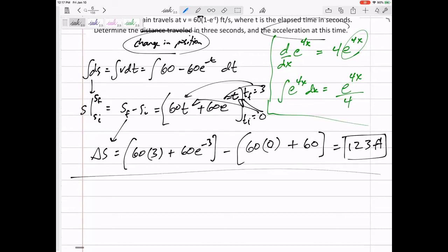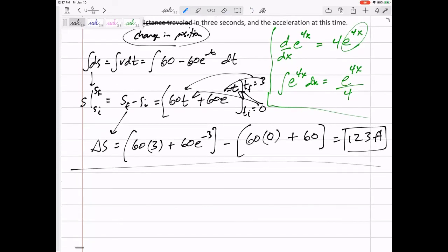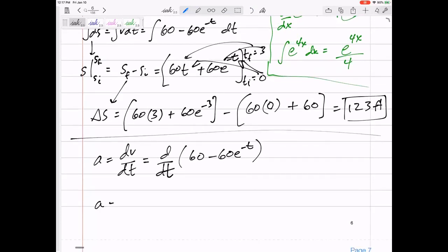All right. Now, let me answer the second part of it. What's the acceleration after three seconds? Well, let me take the derivative. Acceleration is dv/dt. So, the derivative with respect to time of 60 minus 60e to the negative t. Derivative of 60 is nothing.